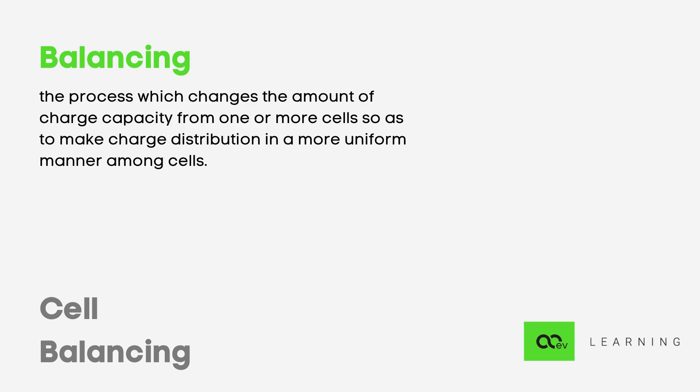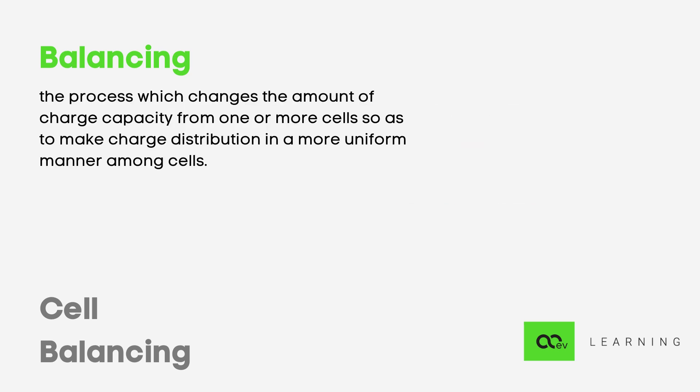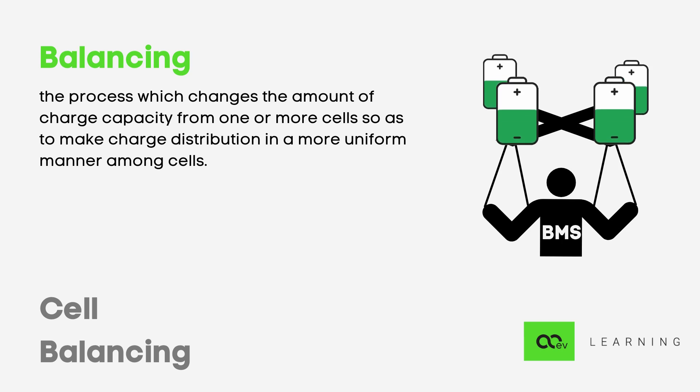Cell balancing is the process which changes the amount of charge capacity from one or more cells so as to make charge distribution in a more uniform manner among cells. This is done with the help of BMS (battery management system).